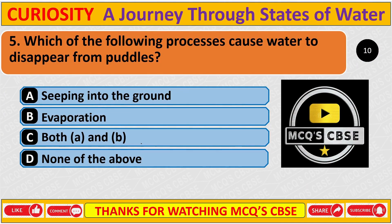Which of the following processes causes water to disappear from puddles? The correct answer is C: Both A and B — seeping into the ground and evaporation.